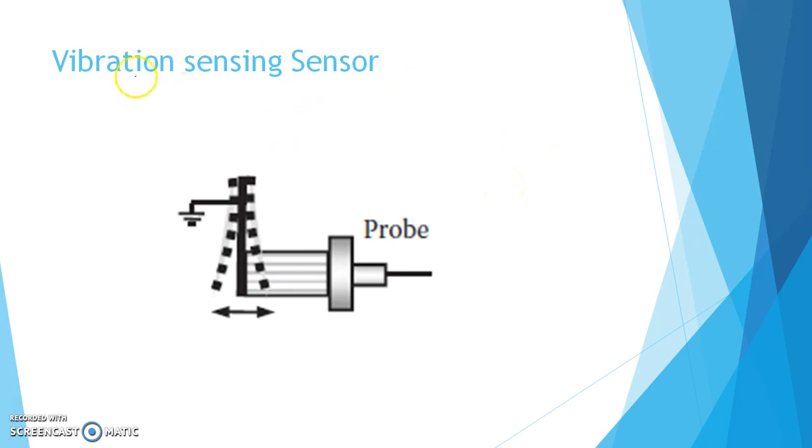So let us discuss how vibration sensing sensors work. This is the first plate which is connected with the positive terminal of the DC source. This is basically fixed. And this is the second plate which is basically vibrating. Instead of displacement, this plate is vibrating.